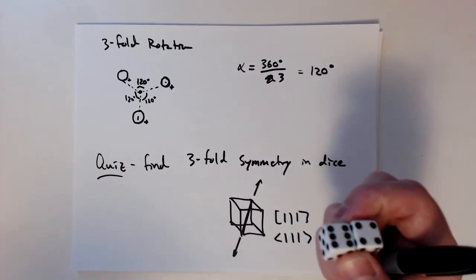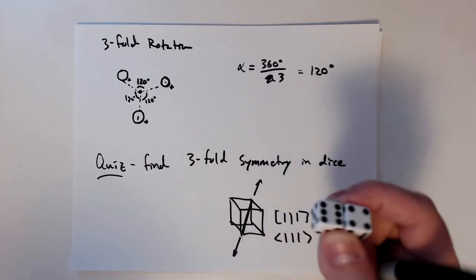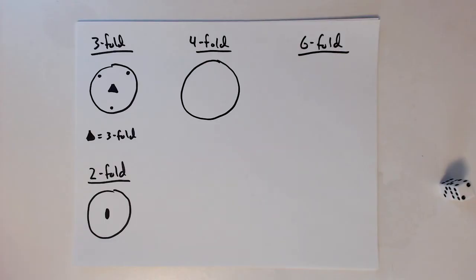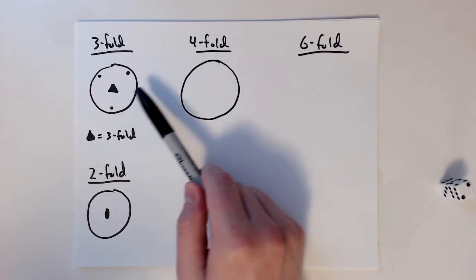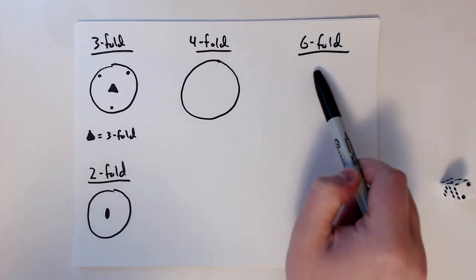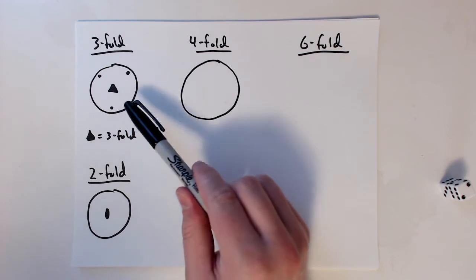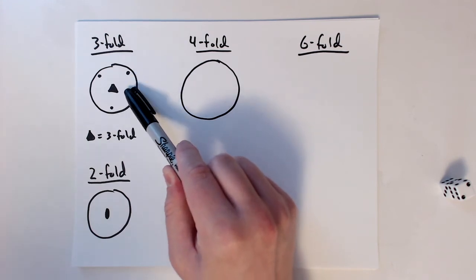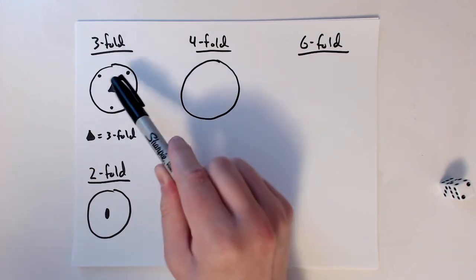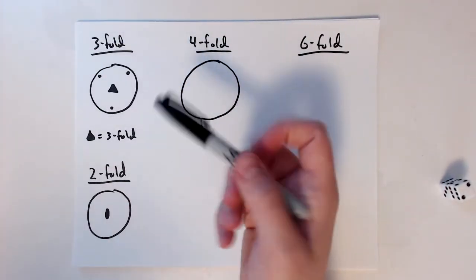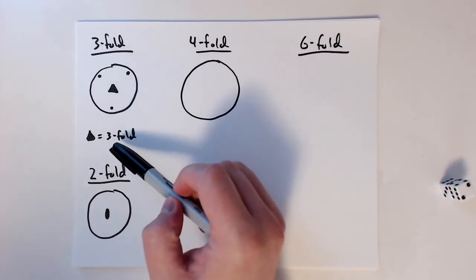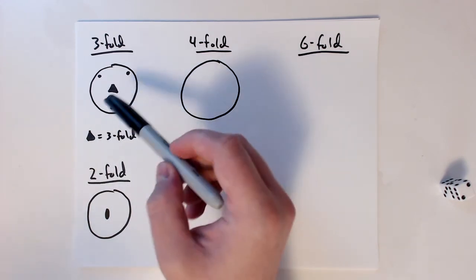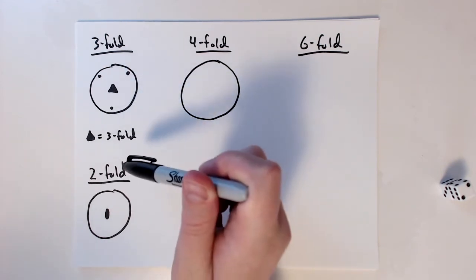That threefold rotation in cubic structures is a really important part of the symmetry of cubic systems. When drawing these axes, a triangle symbol represents the threefold rotational axis — it's a shorthand notation. I'll also quickly go through twofold, fourfold, and sixfold rotations as additional examples.